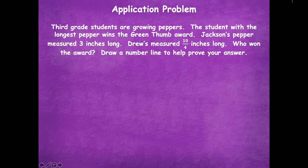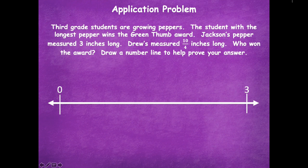Alright friends, pause if you need more time. Here's my number line from zero to three. I have to fill in those missing whole numbers — one and two. Then I can divide each whole number into fourths. Starting from one rather than zero — why didn't I have to do from zero to one? Because we know that one is four-fourths, and ten-fourths is already larger than that, so I don't even have to start there. That saves a little bit of time.